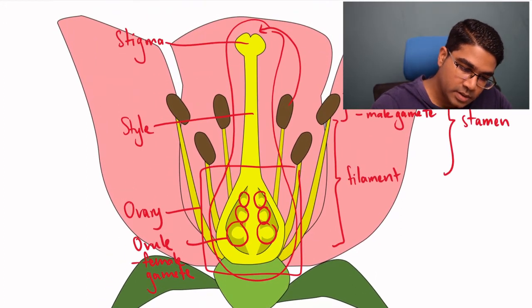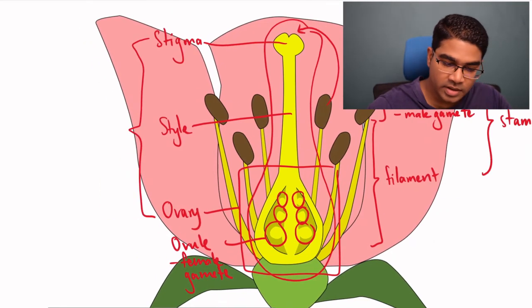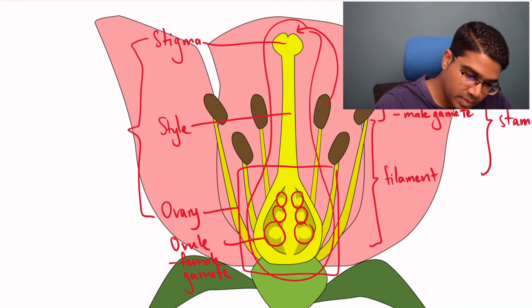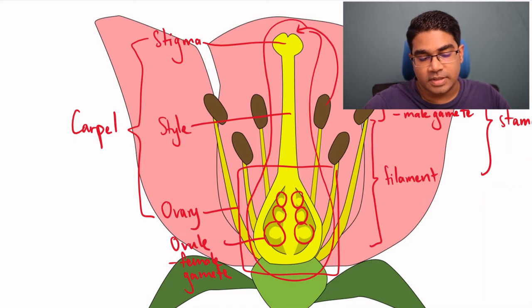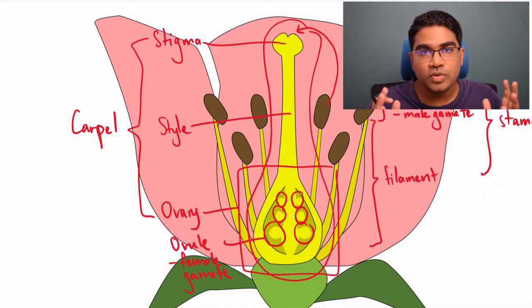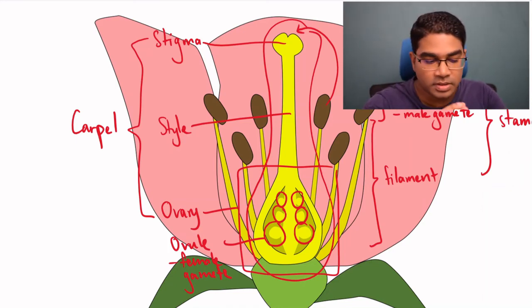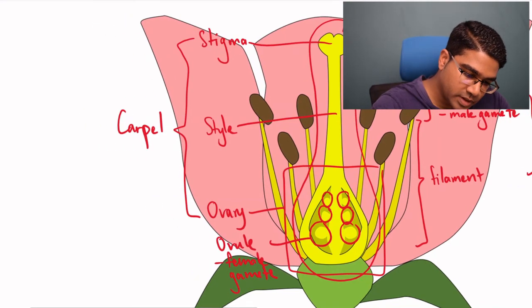So together, collectively, the stigma, the style, and the ovary is known as the carpel. Now, you might have heard of the word pistil. So sometimes they refer to this as the pistil. The pistil is actually a fusion of several carpels. So when many carpels fuse together, this is where we get the pistil.